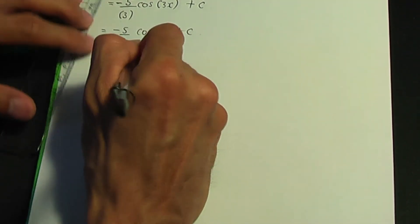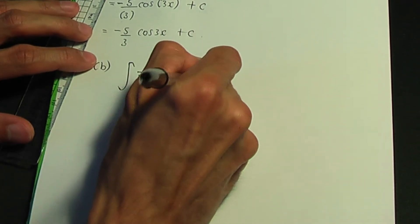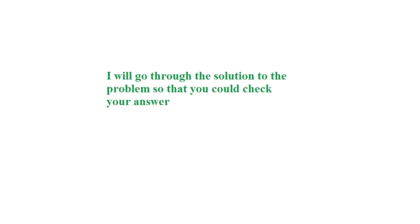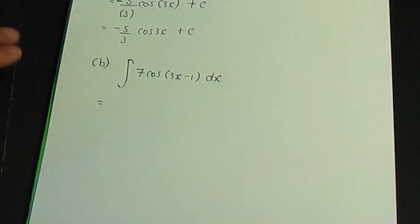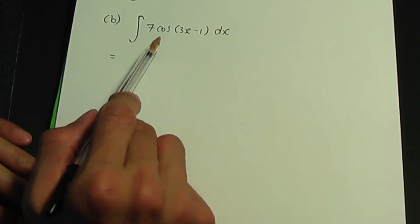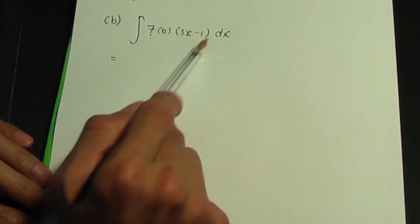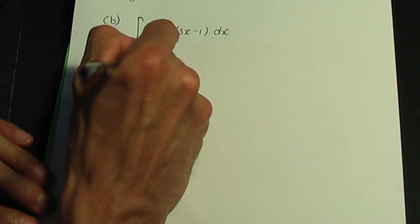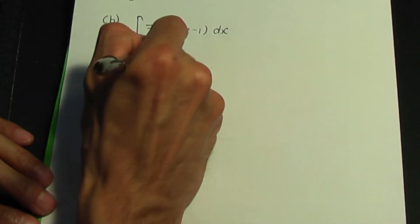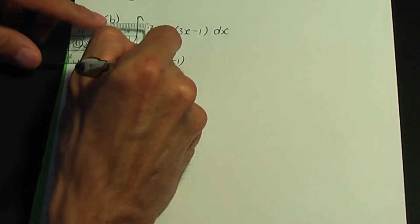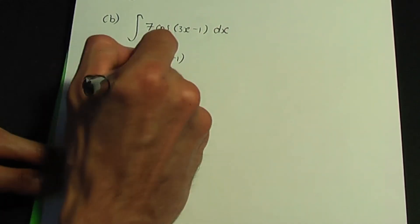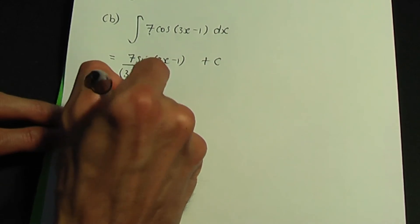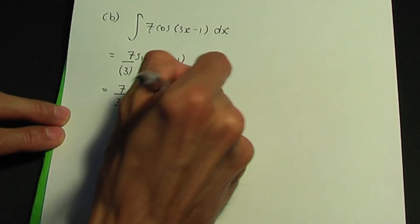Let's integrate 7 cos(3x − 1). k = 7 is a constant, and the angle 3x − 1 is of the form ax + b, so that's fine. When I integrate cos, it's sine. So it's 7 sin(3x − 1) divided by the derivative of 3x − 1, which is 3. Then add c, since we have no limits. The answer is 7 over 3, sin(3x − 1), plus c.